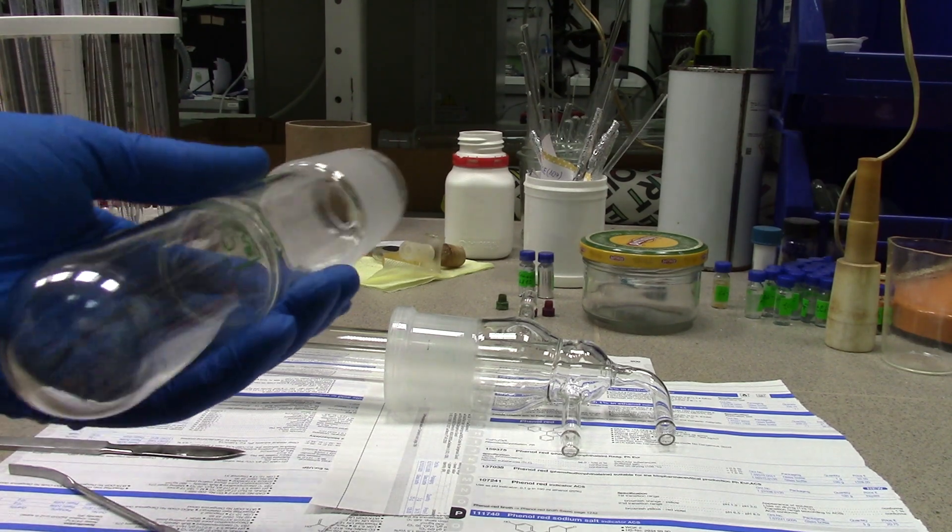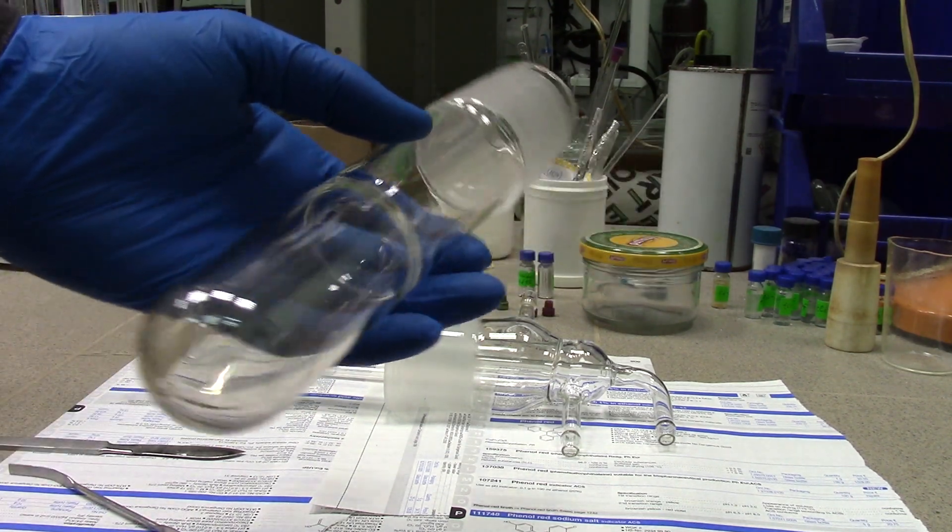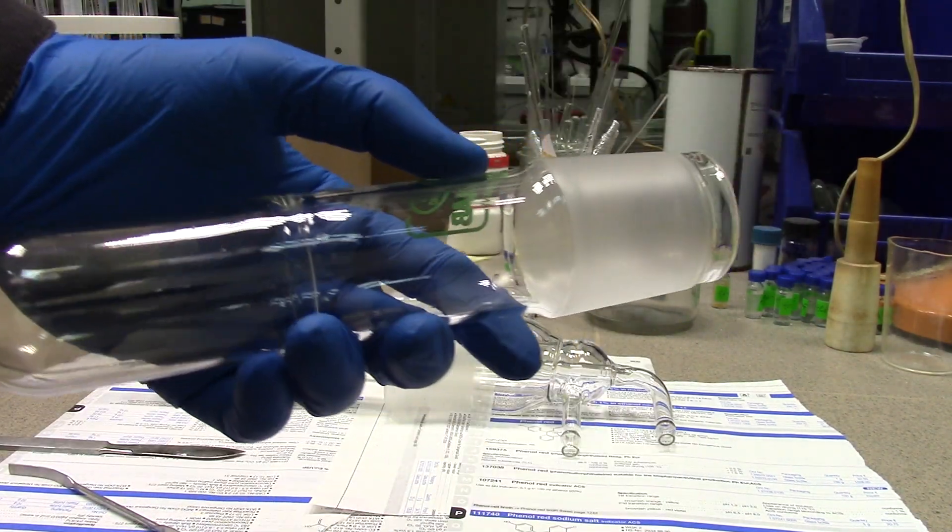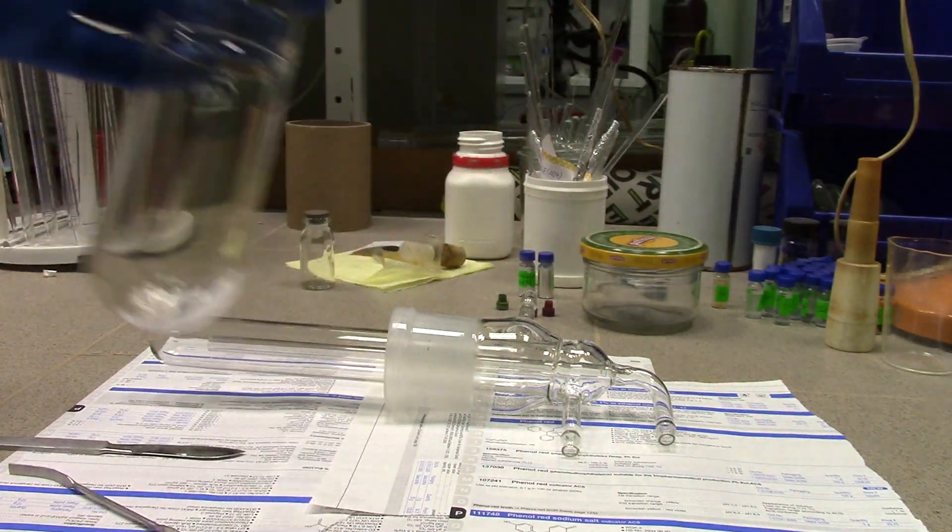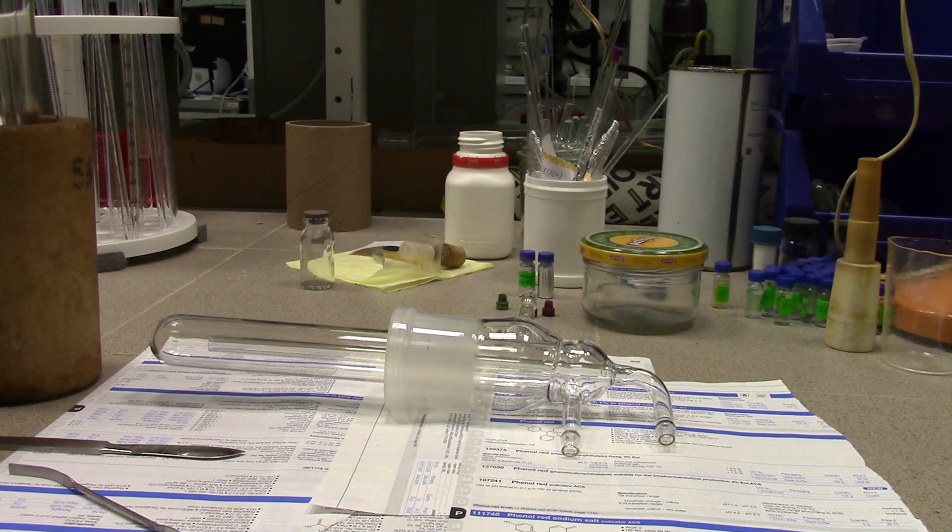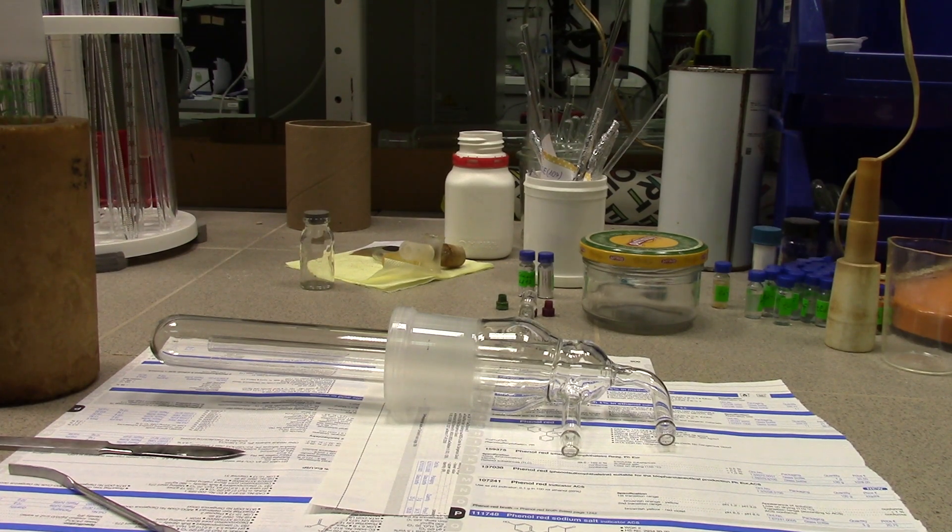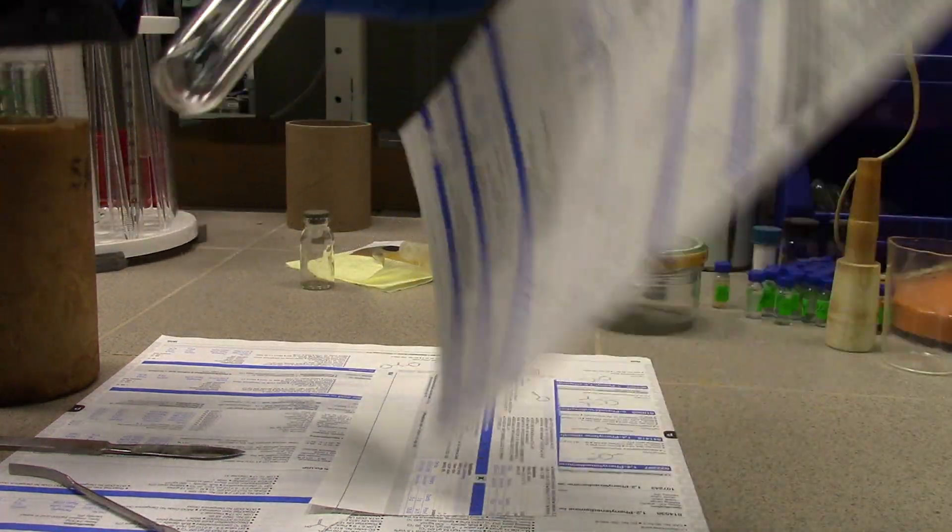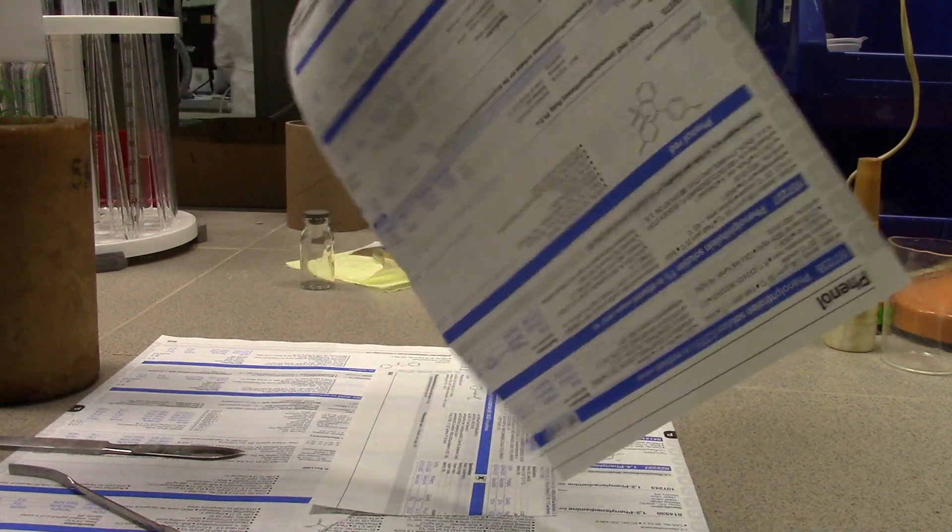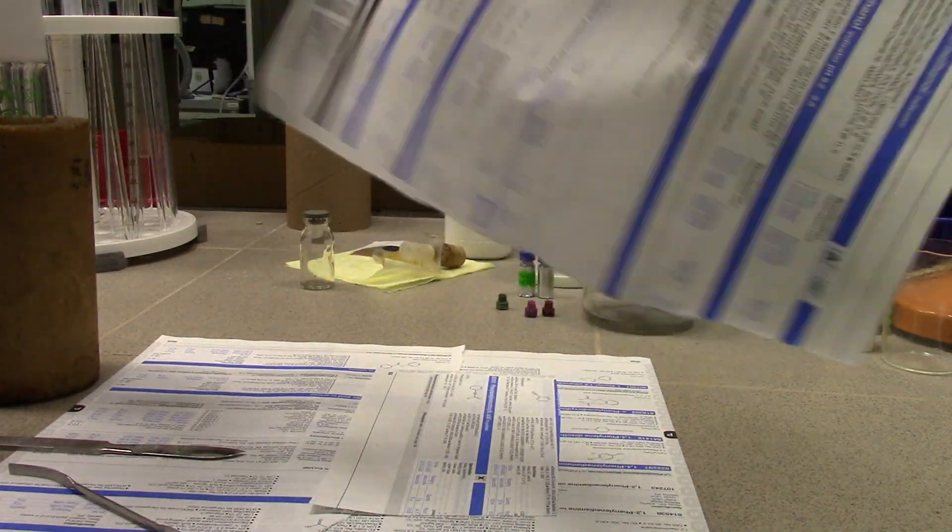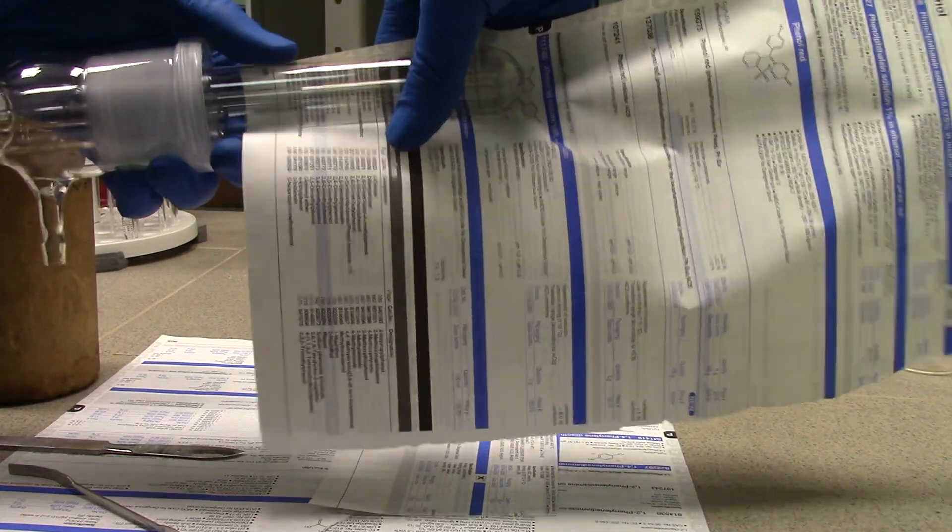First of all you need sublimation apparatus. For simplicity I'll call it sublimator. This is an apparatus base. Before starting all procedures you should cover the workspace using some paper sheets. To move your initial material into sublimator I recommend to make a paper tube to prevent material from contamination.